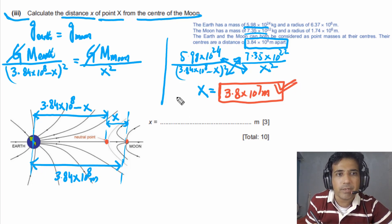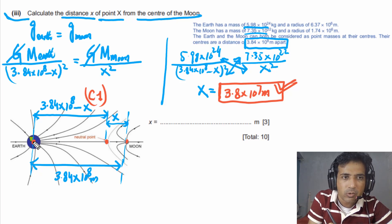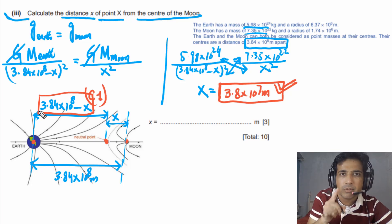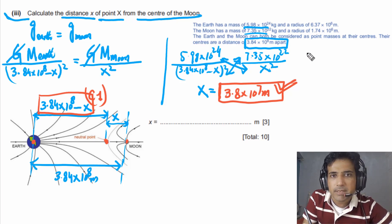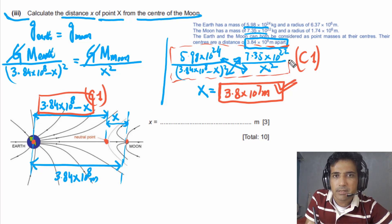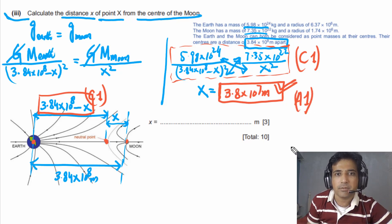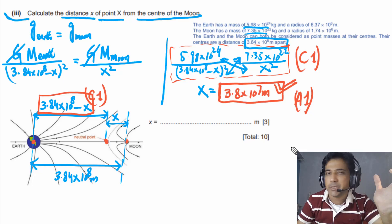This question has three marks. The first C mark is for writing the correct expression for the distance between Earth's center and the neutral point. The second C mark is for equating g due to Earth and g due to Moon. The third mark (answer mark) is for obtaining the correct value x = 3.8 × 10⁷ m.